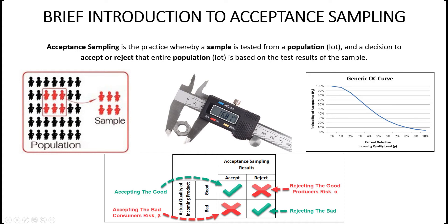The original military standards from the 1940s have morphed into what we call the ANSI Z1.4 and ANSI Z1.9 standards we use today. It became the compromise between destructive or 100% testing and some sort of sampling process. Anytime we do inferential statistics, there's always some risk that we might make the wrong decision — we could reject good material or accept bad material.